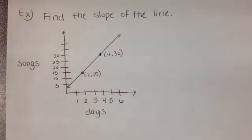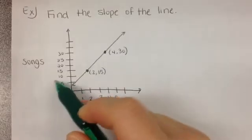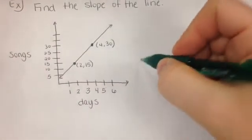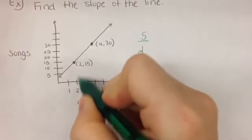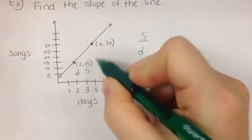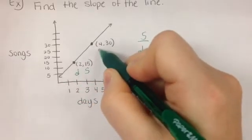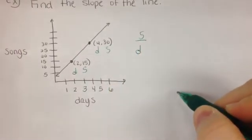Let's try another one looking at a graph. Looking at a graph. So, we're talking about songs per day. And it says find the slope of the line. Now, slope is just rate of change in a graph. So, do I want songs per day or days per song? Songs per day. Now, this is 2 days and up is 15 songs. This point is 4 days and up to 30 songs. So, use that information to find the rate of change.